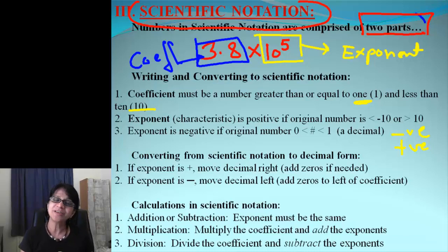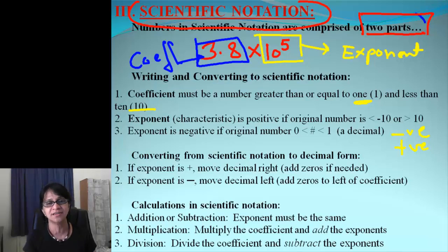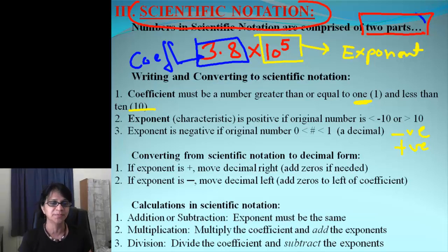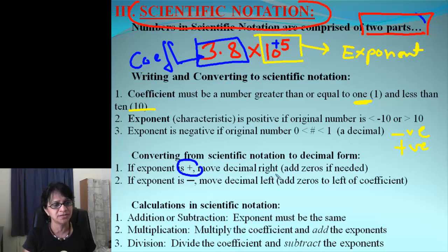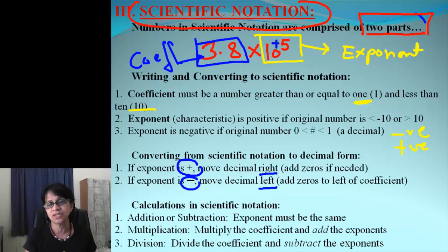Now, coming to the conversion from Scientific Notation to Decimal Form. I know you all have calculators and we'll go over how to use the calculator, but sometimes it's simple to convert by knowing this basic rule. If the Exponent is positive, you move the decimal point to the right. And if it is negative, we move it to the left.